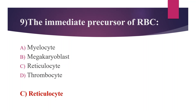Reticulocytes are slightly immature RBCs. Myelocyte is a young cell of the granulocytic series, occurring normally in bone marrow. Megakaryoblast is the beginning of the thrombocytic series, a precursor cell to a promegakaryocyte, which in turn becomes a megakaryocyte during hematopoiesis. Thrombocyte, also called platelet, forms clots and prevents bleeding.